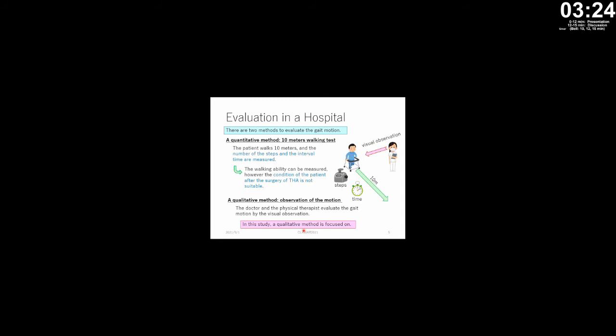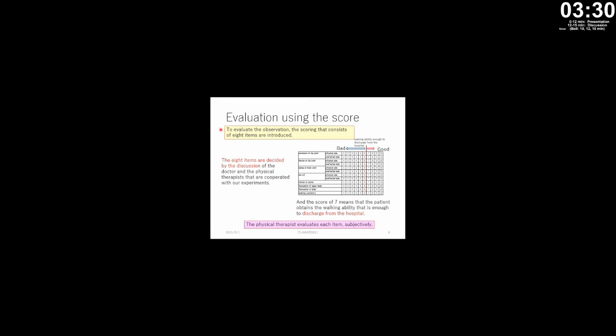To evaluate the observation, we introduced scoring consisting of eight items. The eight items were decided by discussion between the doctor and the physical therapist. A score of seven means the patient has obtained sufficient walking ability to be discharged from the hospital. The physical therapist evaluates each item subjectively.